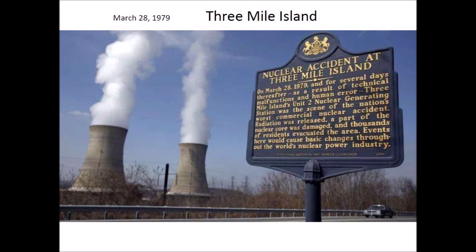Unit 2 of the Three Mile Island Generating Station shut down in 1979. Unit 1 continued providing electricity but was permanently shut down on September 20, 2019. The Three Mile Island Power Plant is currently being decommissioned and dismantled.